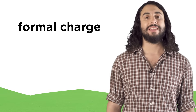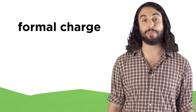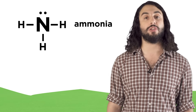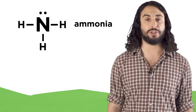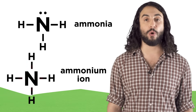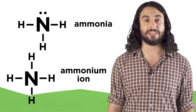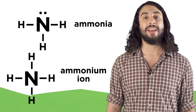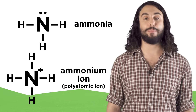Sometimes an atom in a Lewis dot structure will have a formal charge. This happens if the number of electrons an atom is contributing to a Lewis dot structure is different from its typical valence. Nitrogen has five valence electrons, so in ammonia, where it contributes those five — one per covalent bond plus the lone pair — it will be a neutral nitrogen atom. For the ammonium ion, nitrogen is now contributing four electrons to the Lewis dot structure, one per bond. That's one less than its typical valence, and one fewer negatively charged particle means the nitrogen will have a formal positive charge, making this a polyatomic ion.